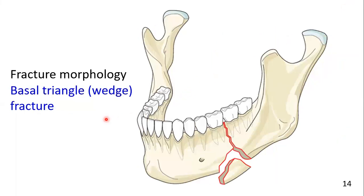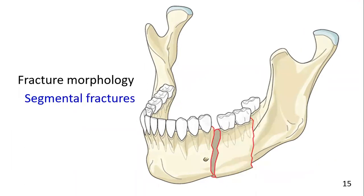A basal triangle or wedge fracture involves a triangle at the inferior part of the mandible. Segmental fractures present two fracture lines, both complete within the same anatomic location.